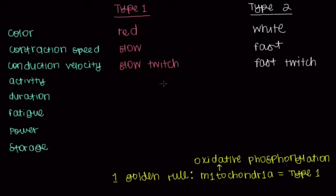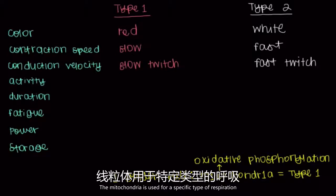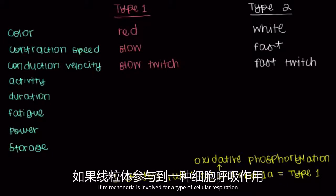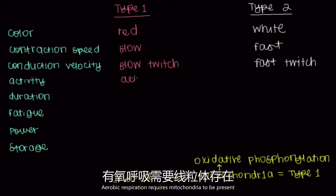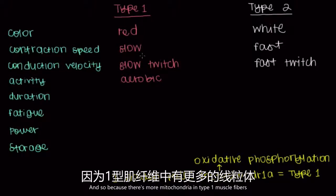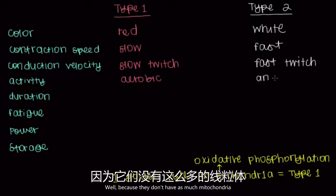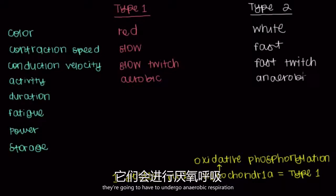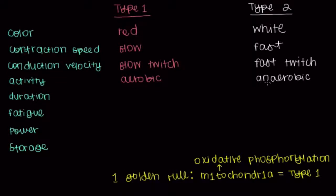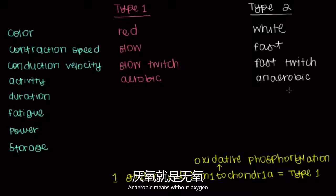What types of activities do type 1 muscle fibers involve? Oxidative phosphorylation is used for a specific type of cellular respiration — aerobic respiration — which requires mitochondria. Because there are more mitochondria in type 1 muscle fibers, type 1 will undergo aerobic respiration. Type 2, because they don't have as much mitochondria, will undergo anaerobic respiration — respiration in the absence of oxygen.